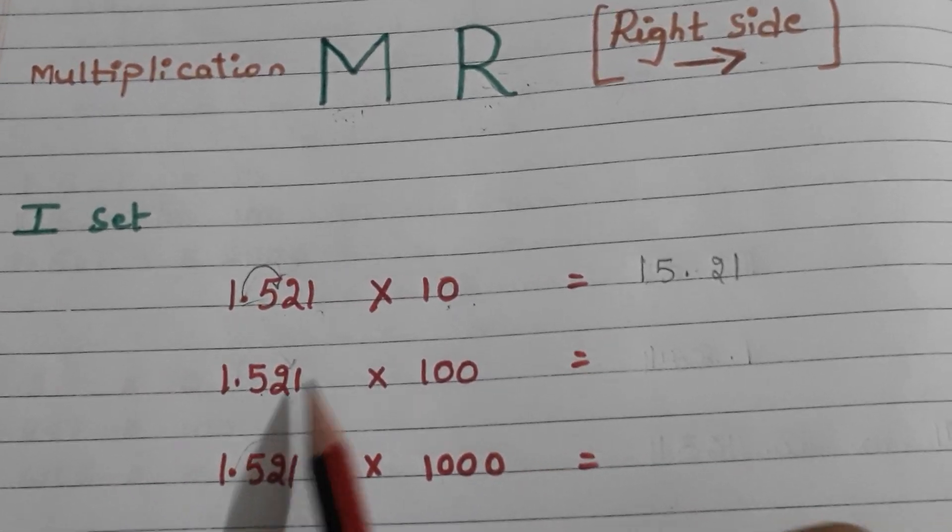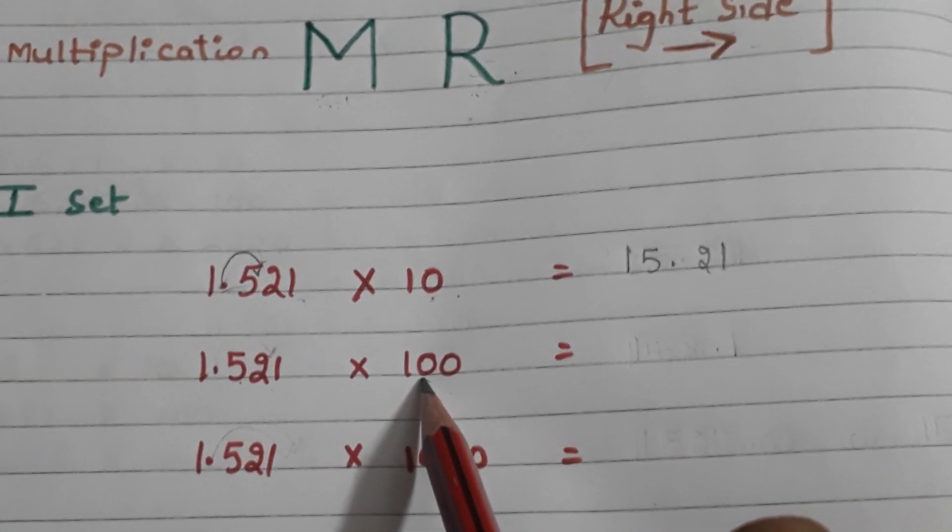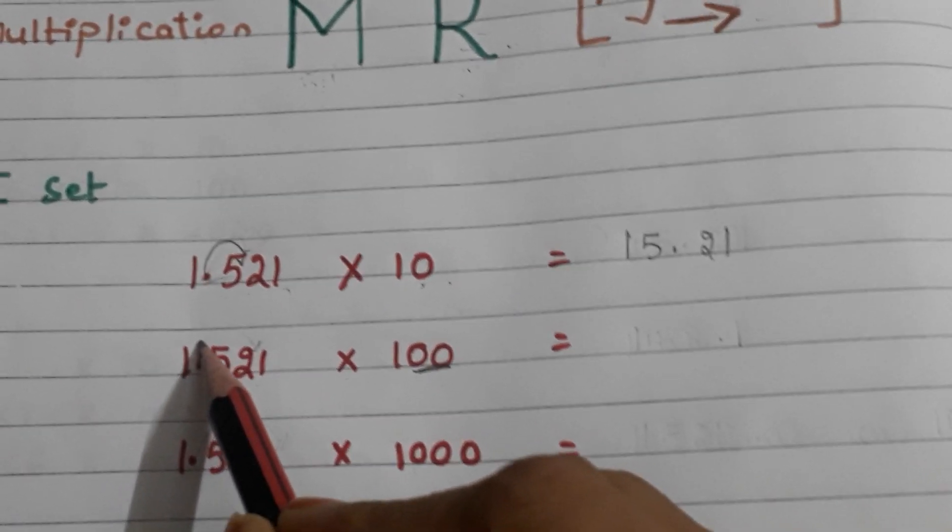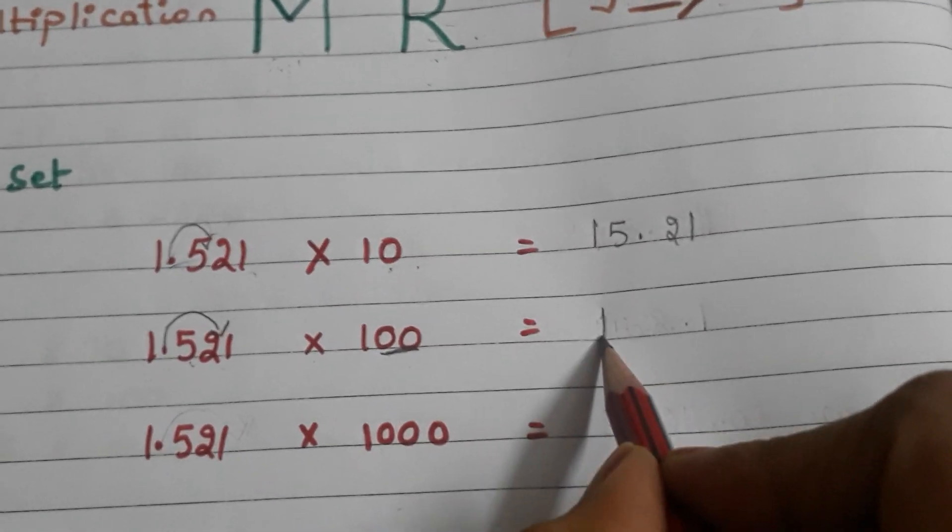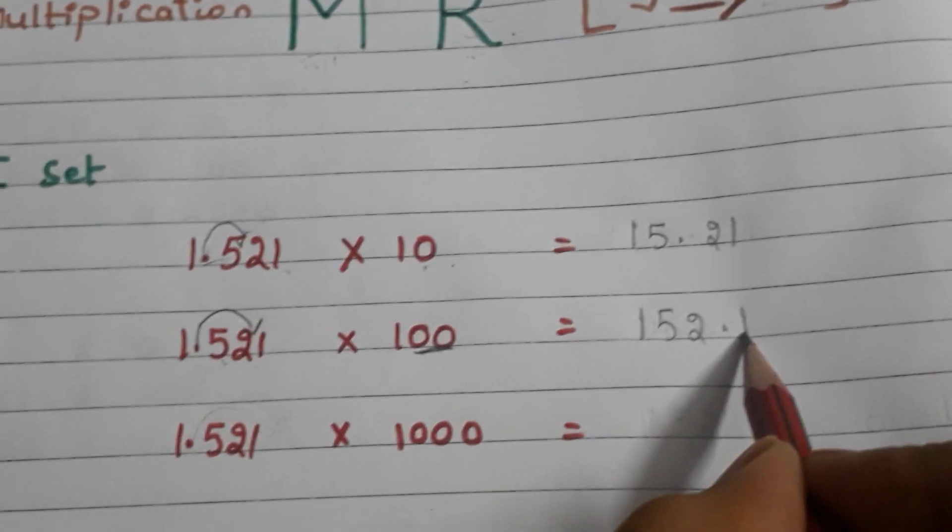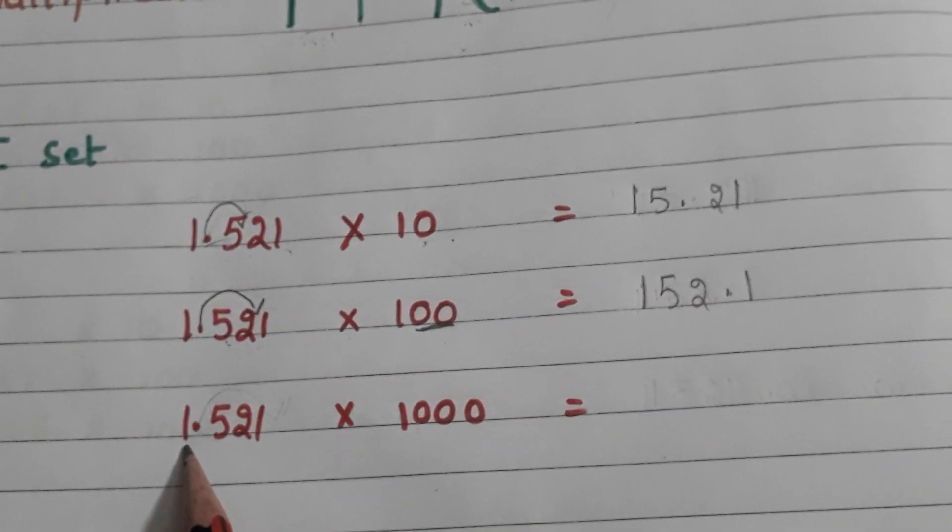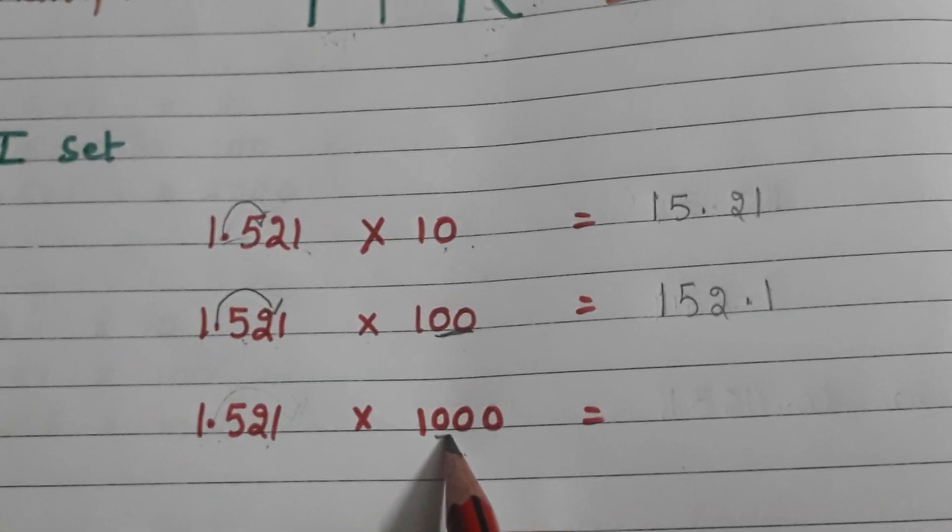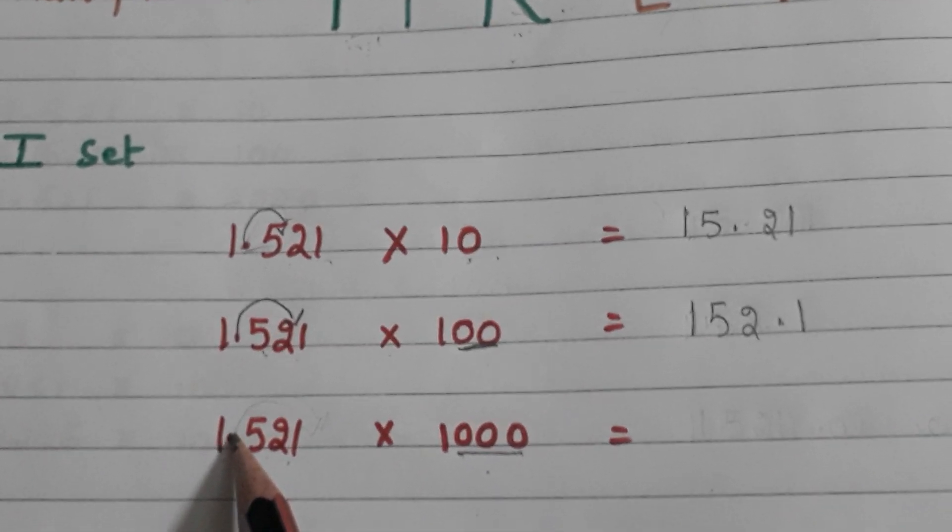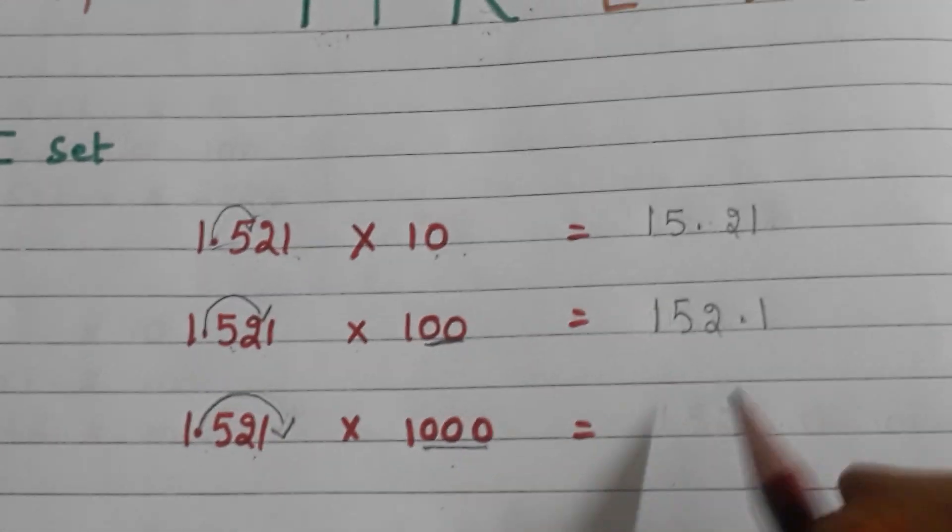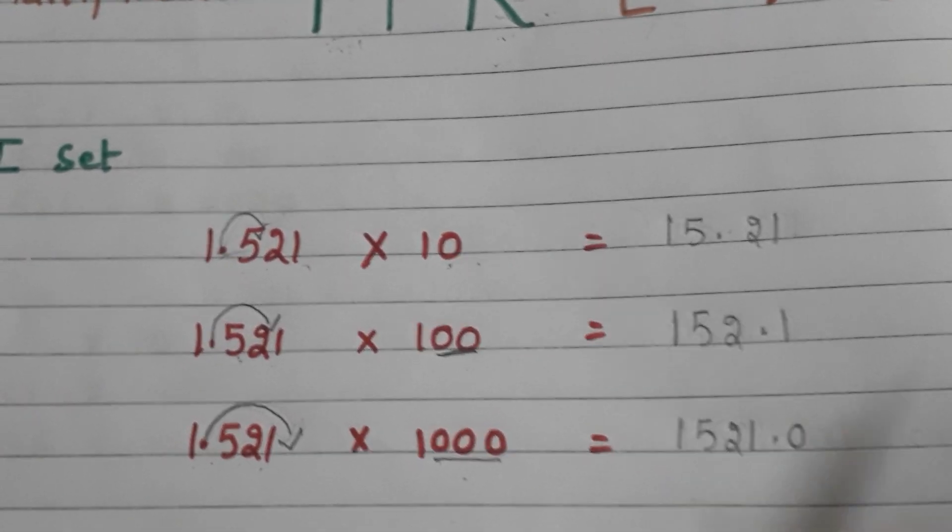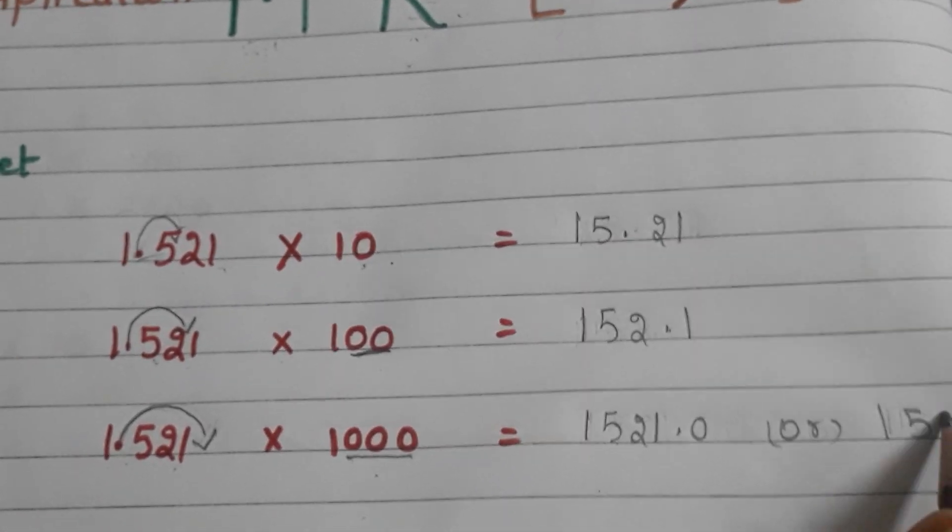1.521 into 100. In 100 how many zeros are there? Two zeros. So I am moving the decimal by two places to the right side. Moving to here. The answer will be 152.1. Let us go to the second set of examples.